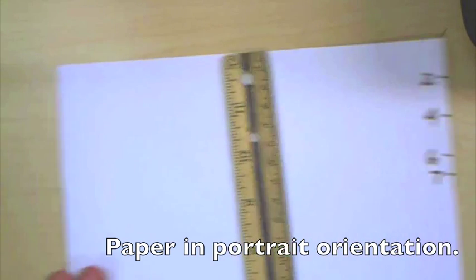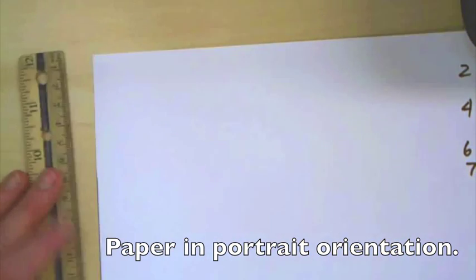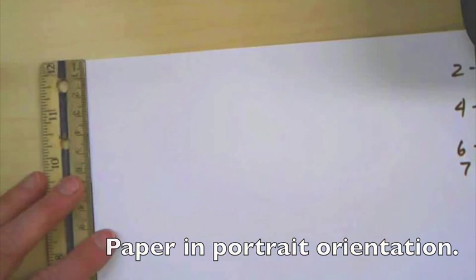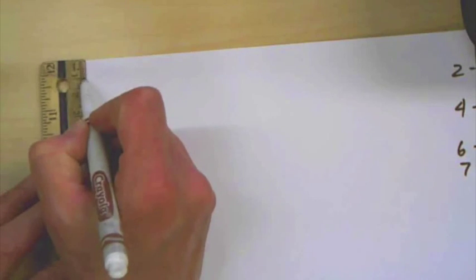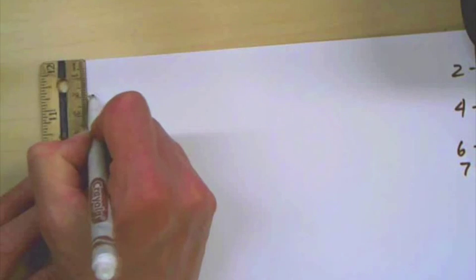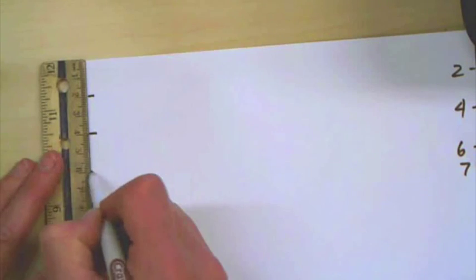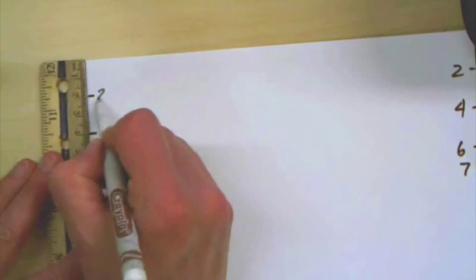And then, you're going to slide your ruler over, and from the same top, from the top, but on the left side, or the other side, you're going to make marks at the 2, at the 4, at the 6, and at the 7 again.